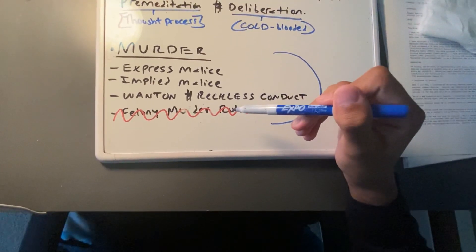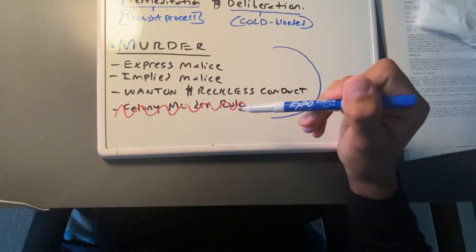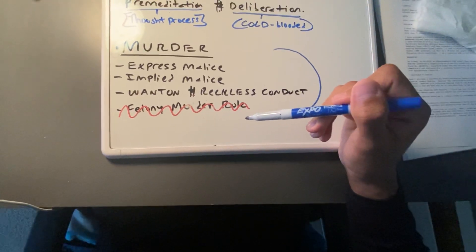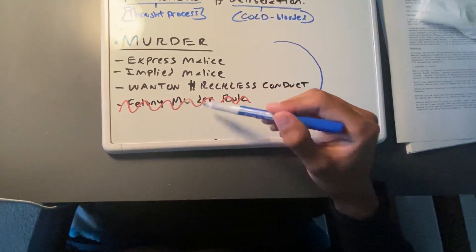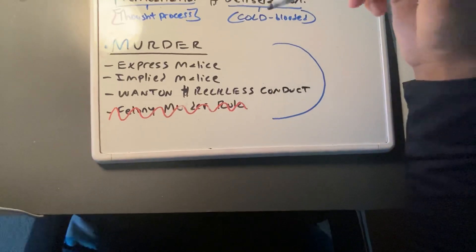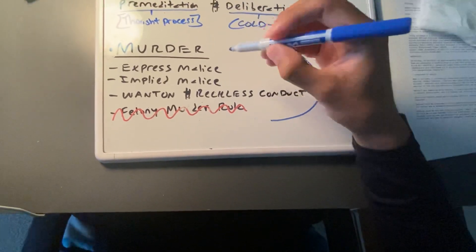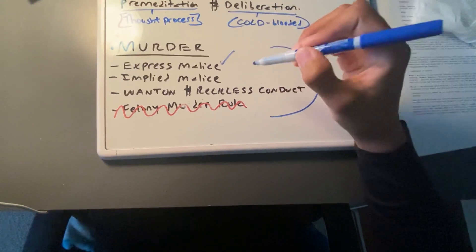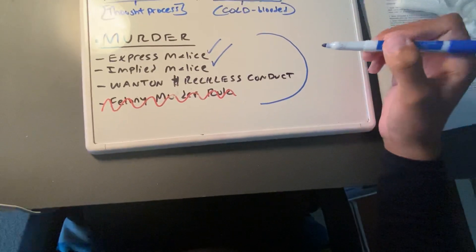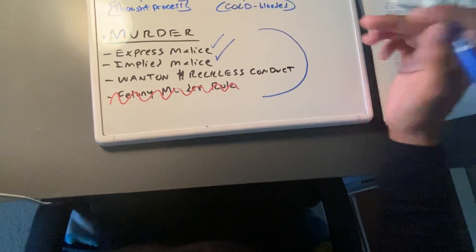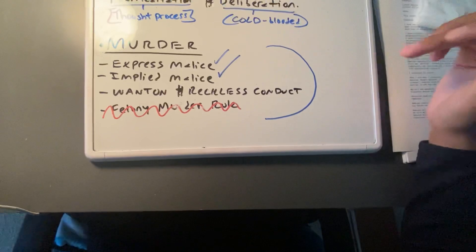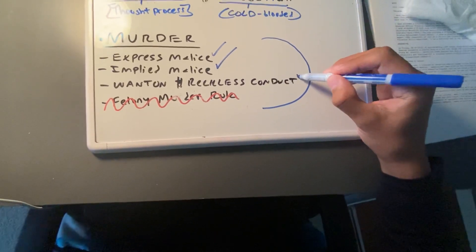I easily crossed off the felony murder rule because D was in the course and scope of his employment as a police officer — he was not committing a felony. So I can cross out the felony murder rule entirely. However, express malice is important here. Express malice means the intent to kill. Implied malice means the intent to cause serious bodily harm. Reckless conduct means the defendant was acting very recklessly — for example, misusing a deadly weapon which caused the death of another person.